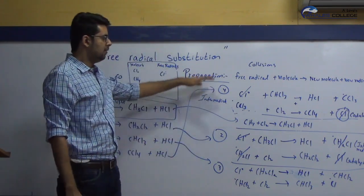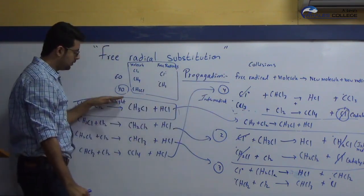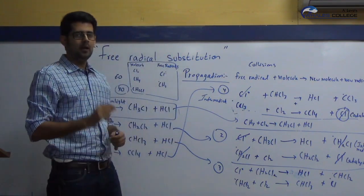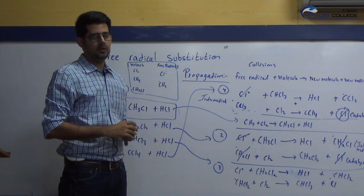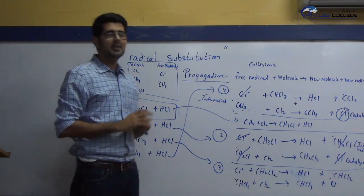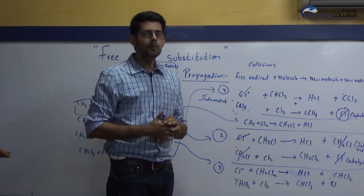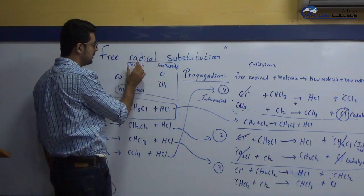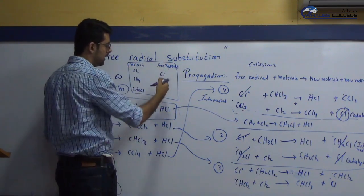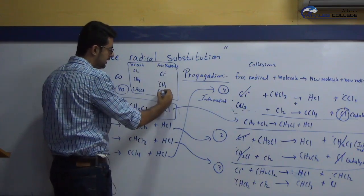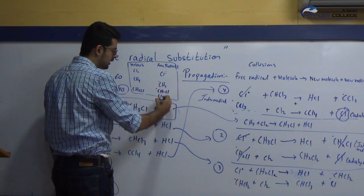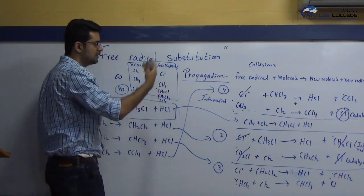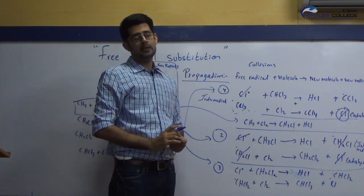So till here we have explained how these four steps take place. In the next video, lecture number 3, I'll be explaining that these are not the only products possible. There are more products because we have been focusing only on collisions between a molecule and a free radical. There are many free radicals present — CH₂Cl, CHCl₂, and CCl₃ — and collisions between free radicals result in many new possibilities, which I will explain in lecture 3.